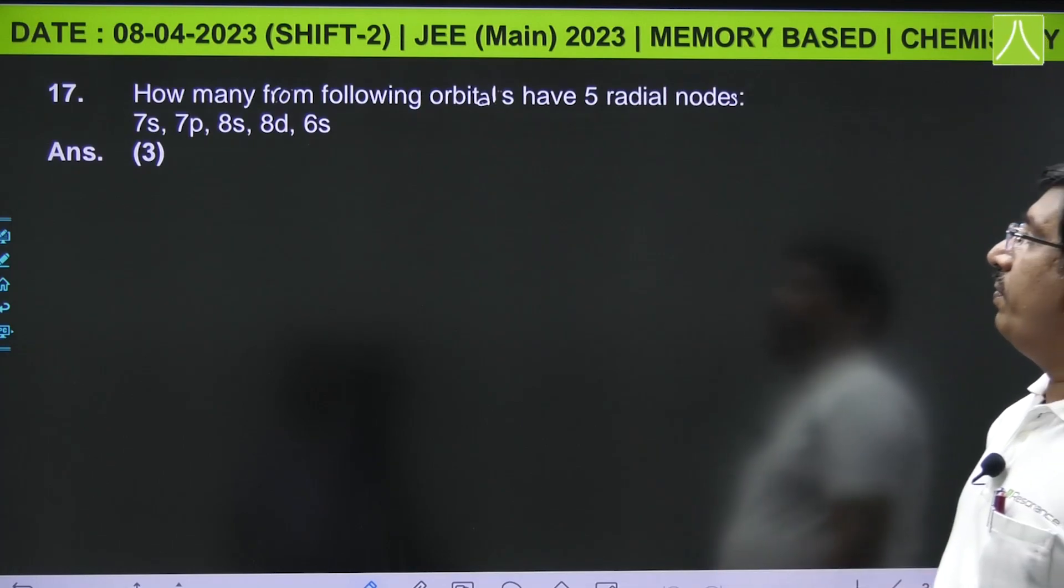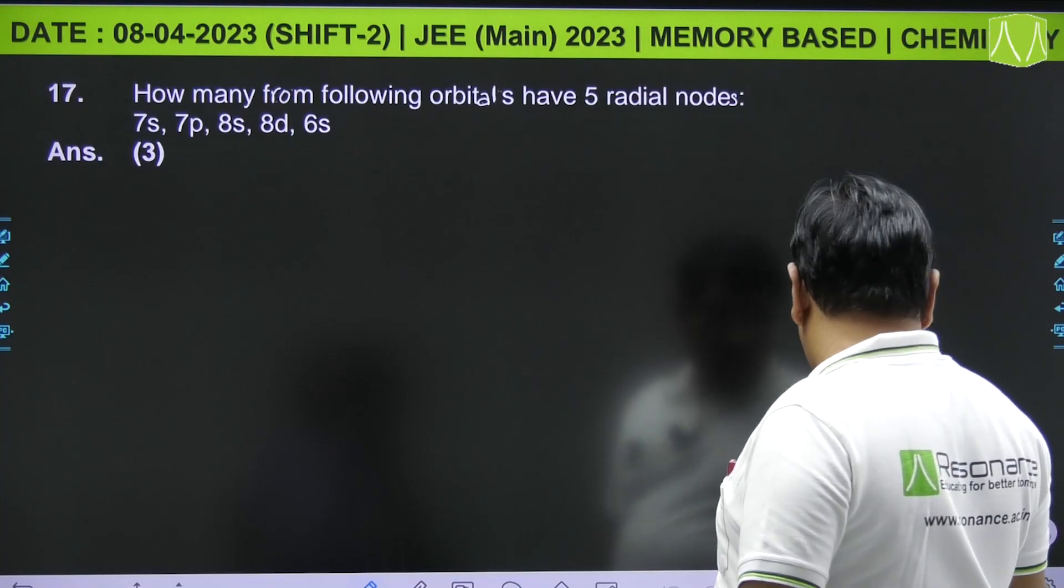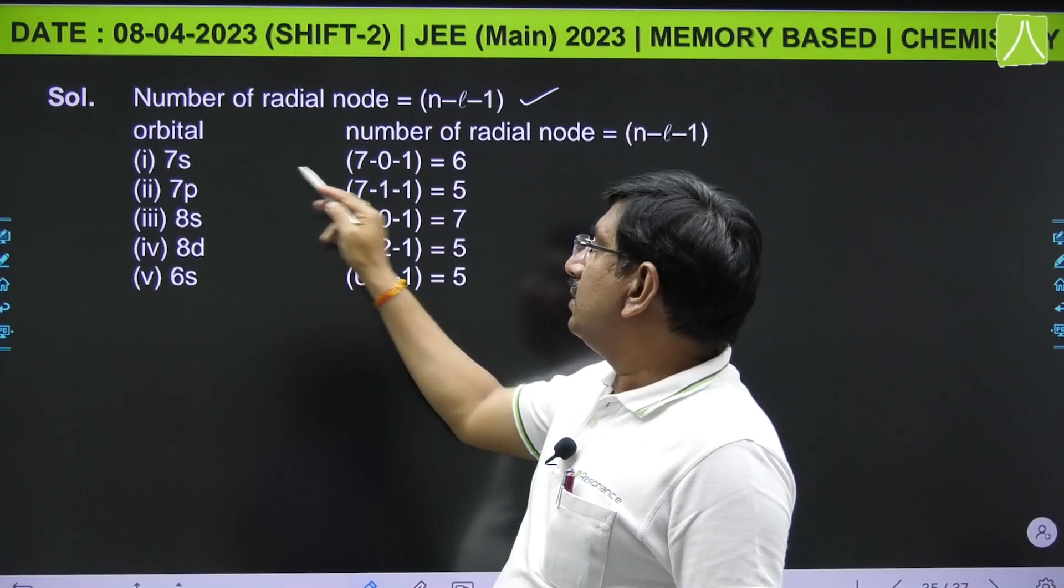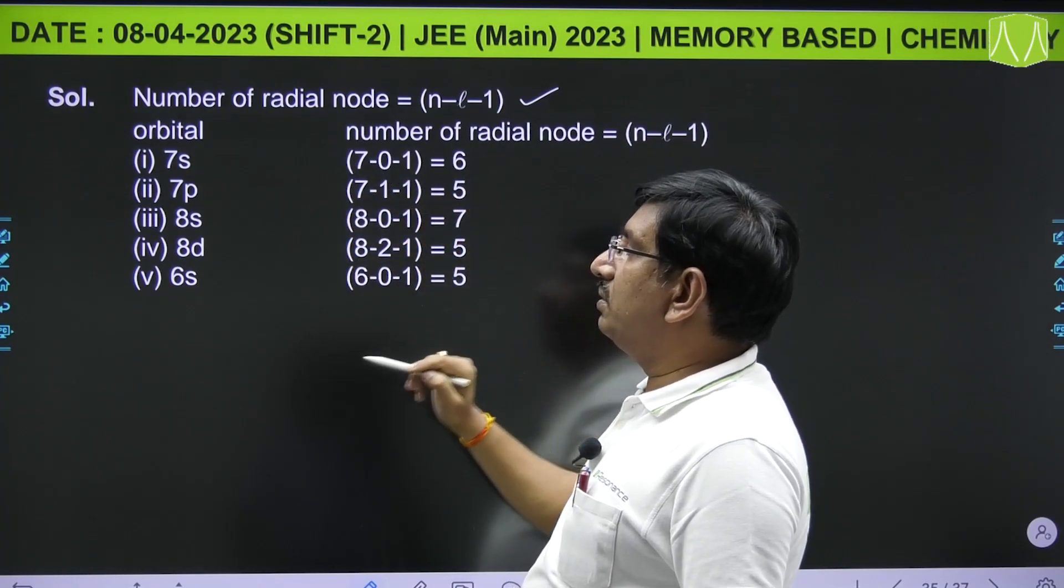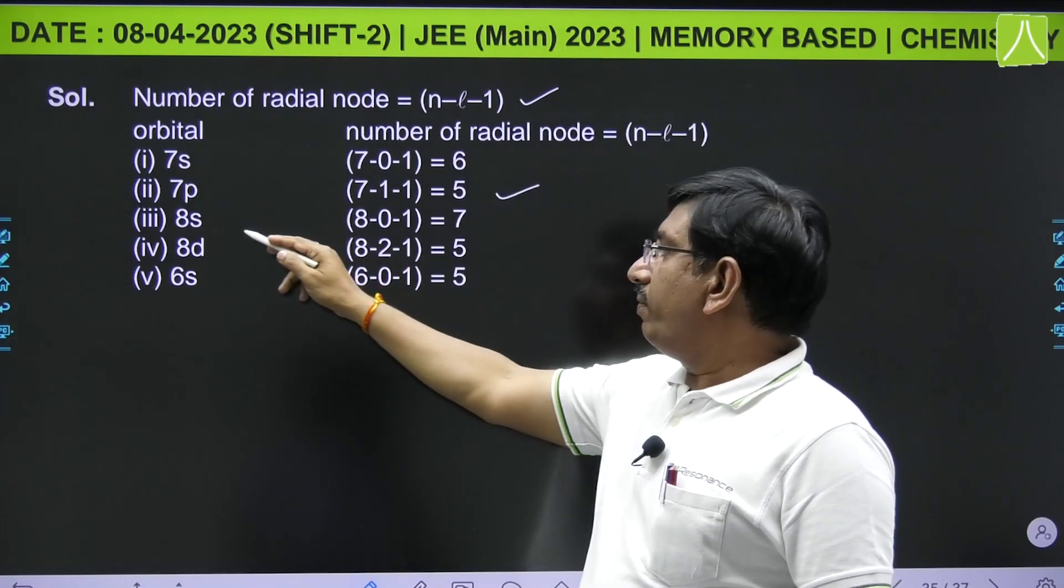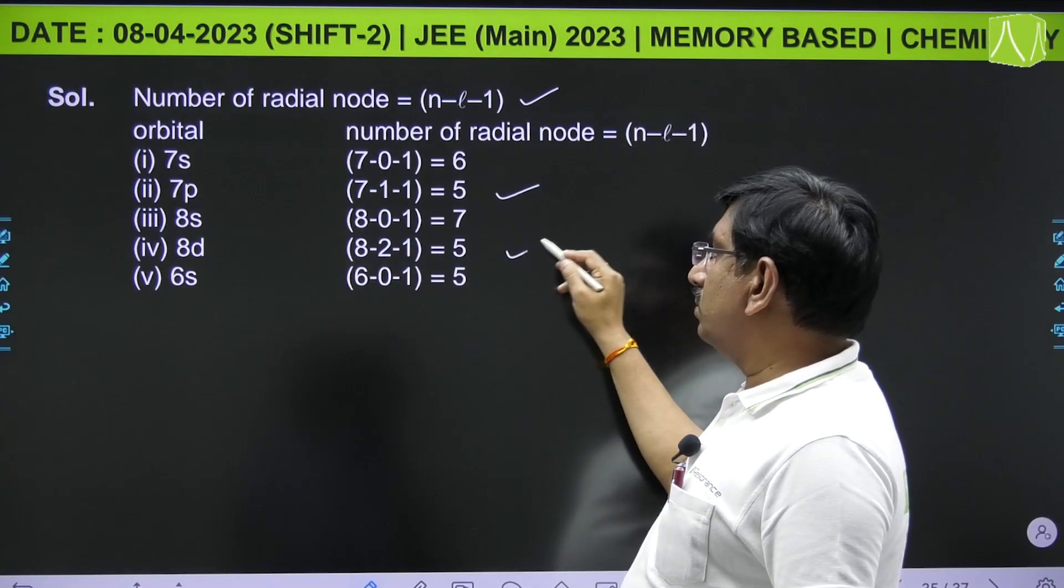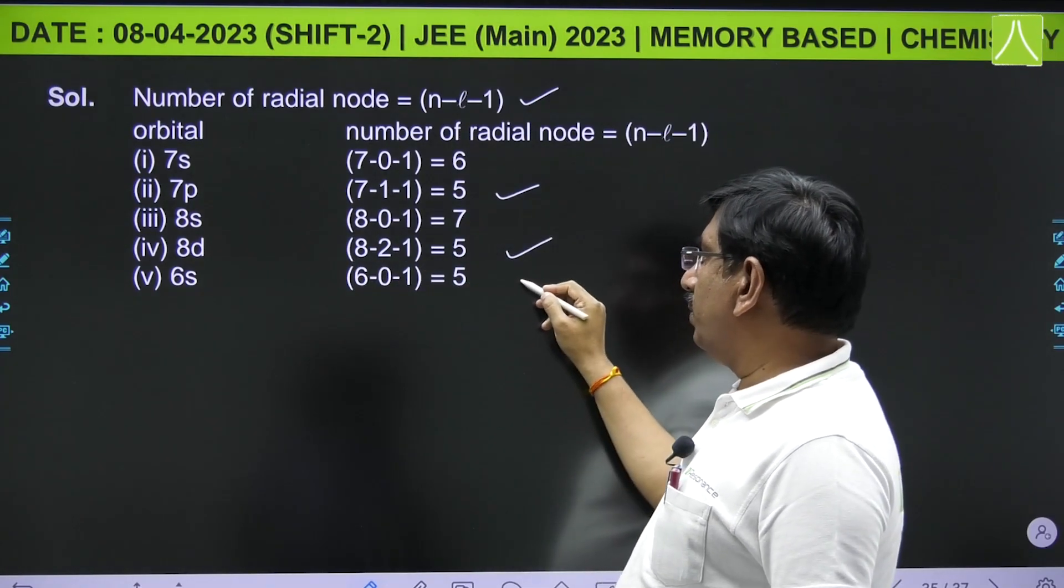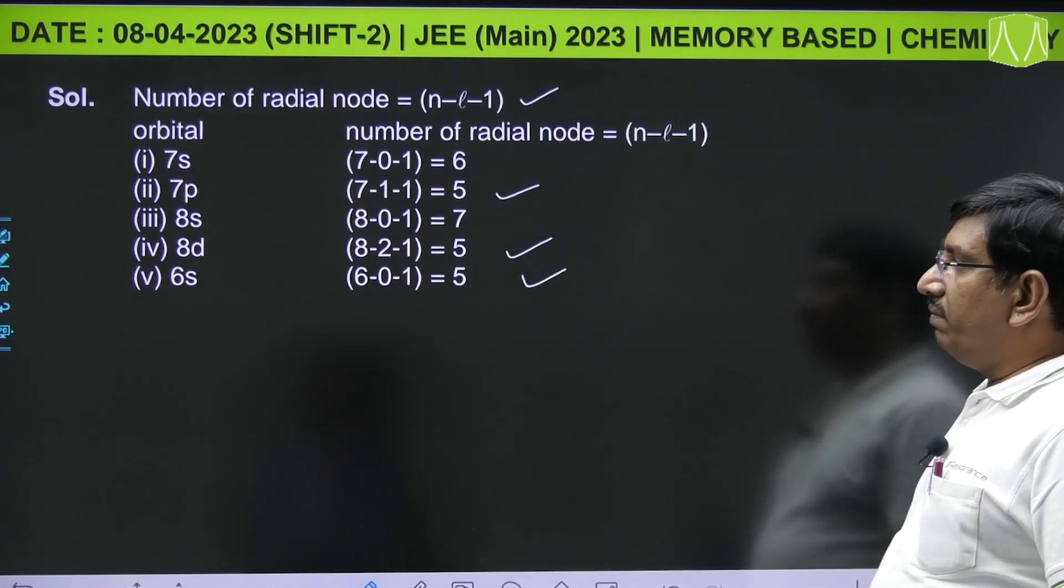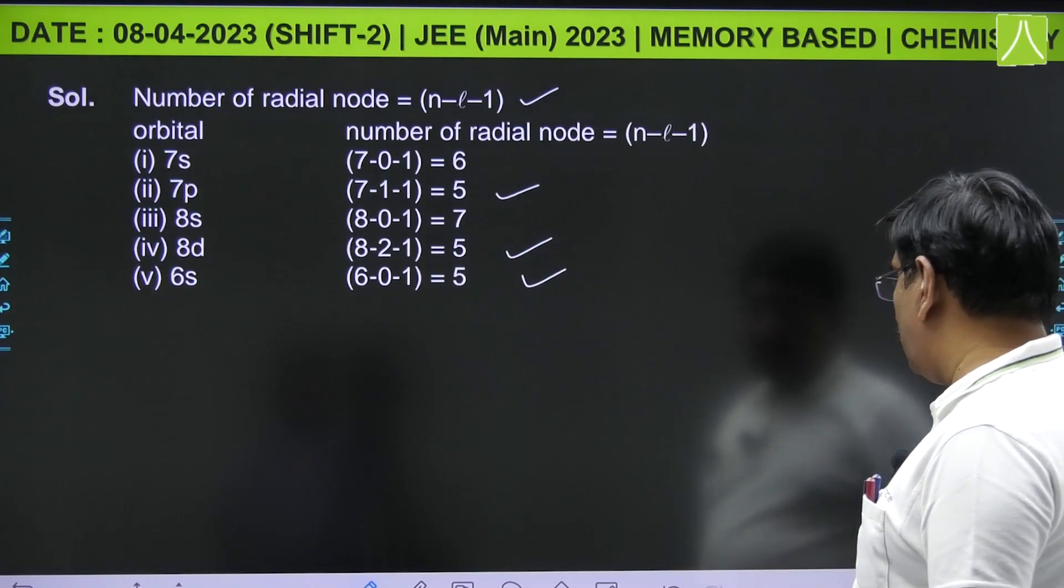Next, how many from the following orbitals have 5 radial nodes? The number of radial nodes equals n - l - 1. For 7s: 7 - 0 - 1 = 6. For 7p: 7 - 1 - 1 = 5. For 8s: 8 - 0 - 1 = 7. For 8d: 8 - 2 - 1 = 5. For 6s: 6 - 0 - 1 = 5. So for these 3 orbitals—7p, 8d, and 6s—the number of radial nodes equals 5.